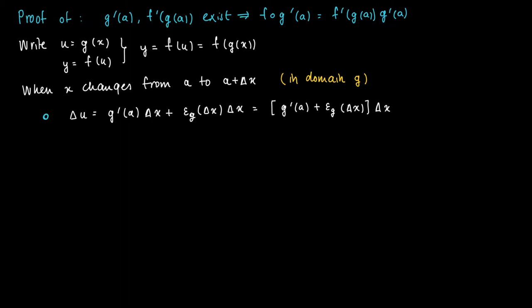Recall that this ε_g was a very special function. When Δx gets smaller and smaller and we take it close to zero, here we take the limit for Δx to zero, then ε_g(Δx) goes to zero. And ε_g was a continuous function with the value zero for Δx equals zero.